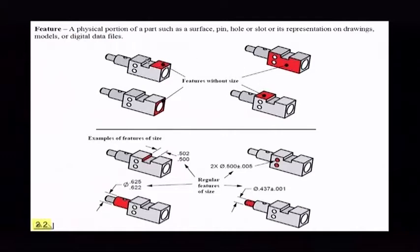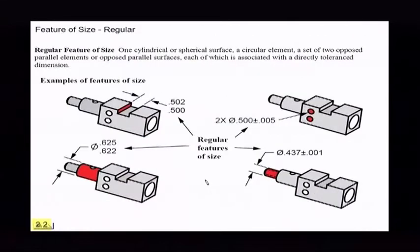What we have is a part here and we have features without size and features with size. You remember features without size are surfaces. Features with size would be like a hole, a slot, tab, a pin, things like this. We used to call these features of size. And now what we have is a clarification. We clarify these things a little bit now.